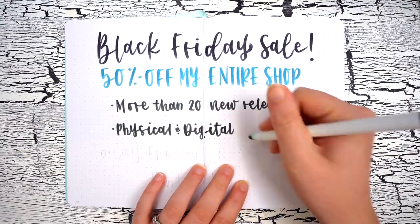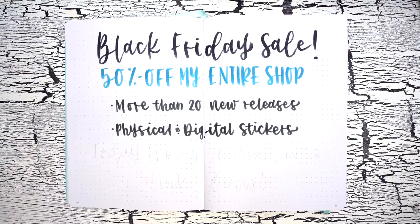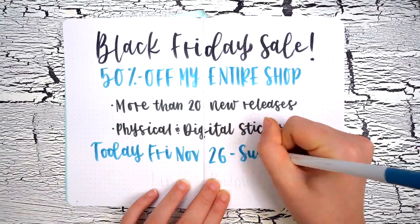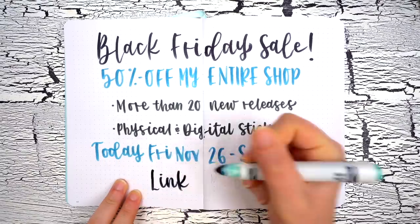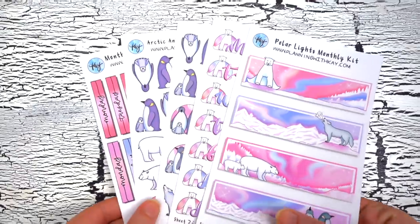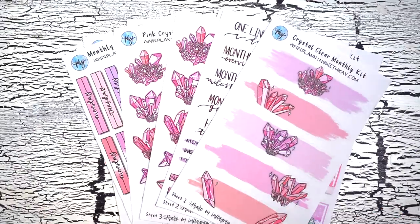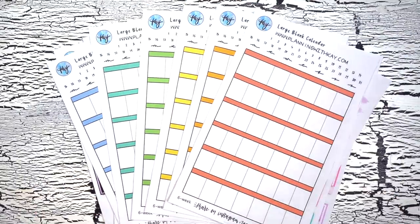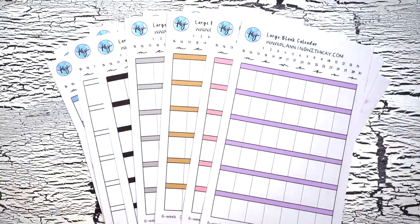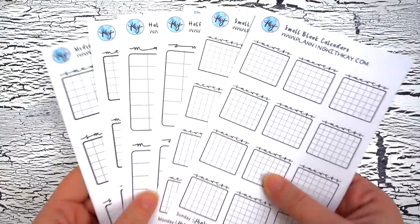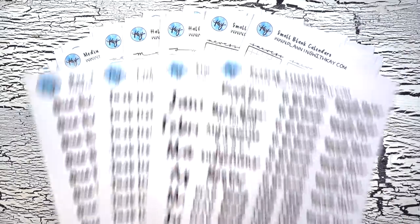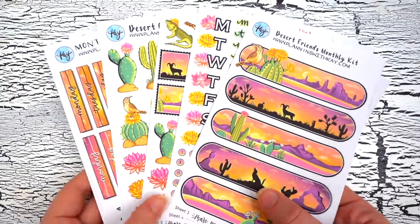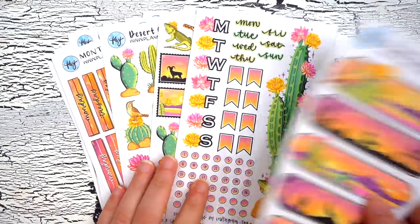Including all physical and digital sticker listings, to celebrate this sale I also have more than 20 new sticker listings available including four new themed collections including the green neon city collection and the desert cactus collection, a ton of calendar basics for the new year and new basic headers including a sheet of reading essentials for all my bookworms out there. Everything is 50% off so be sure to check out the link to my shop in the description below.